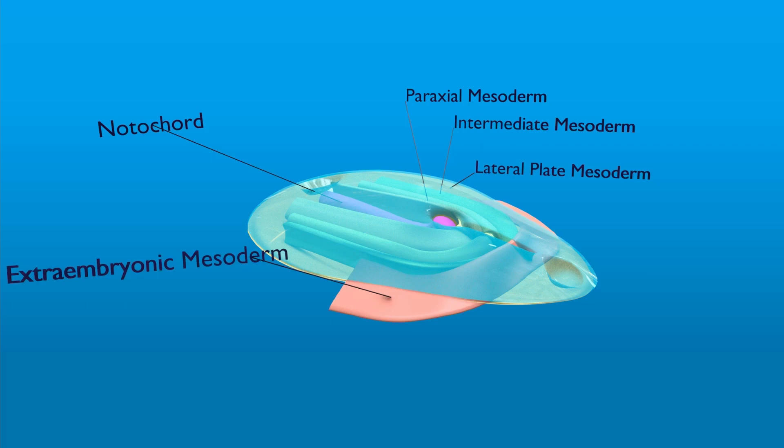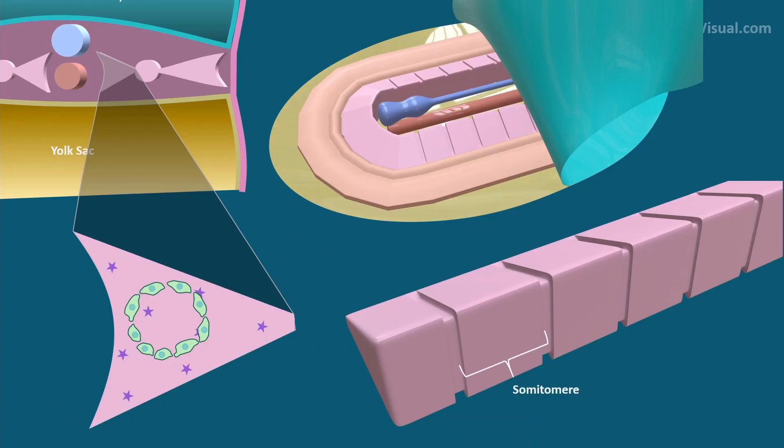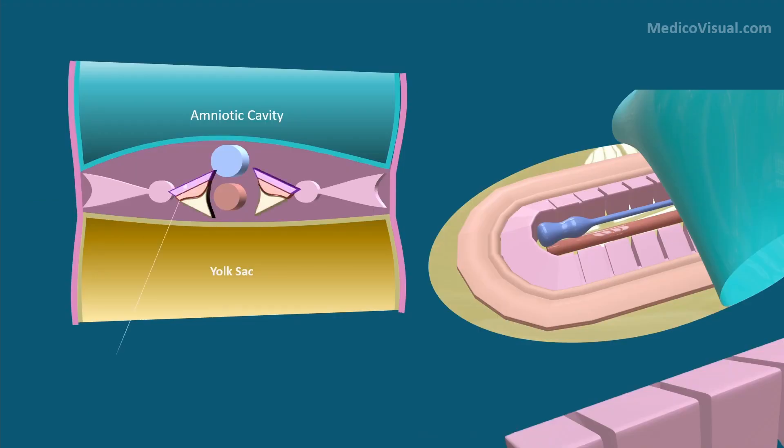Now let us revise the functions of these parts of mesoderm. Paraxial mesoderm is divided firstly into partially segmented blocks called somitomeres. Later, except for several somitomeres, all other somitomeres are transected into completely isolated segmented bodies called somites. The somites are further differentiated into dermatomes that form the skin, myotomes that form the muscle, and sclerotomes that form the axial skeleton.